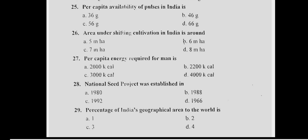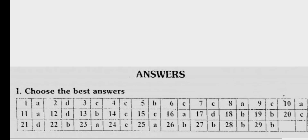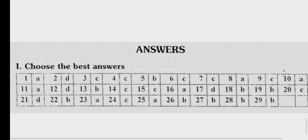Last question — Question 29: Percentage of India's geographical area to the world. Answer is B, second. This is the key paper for these questions.